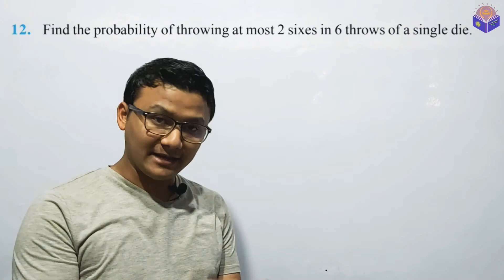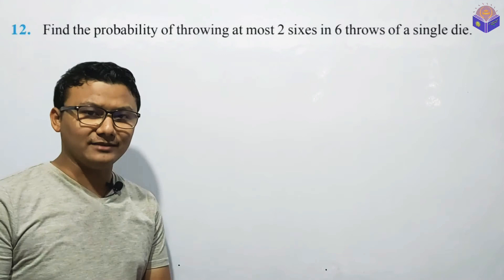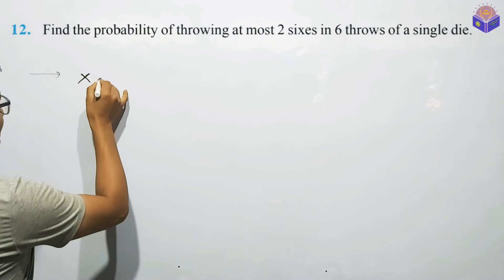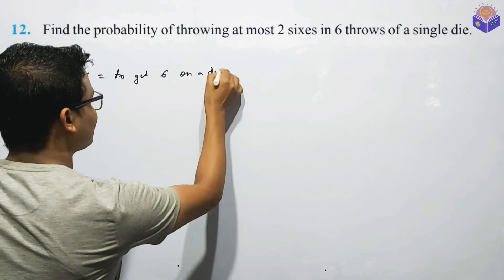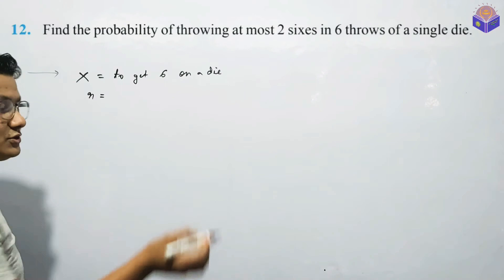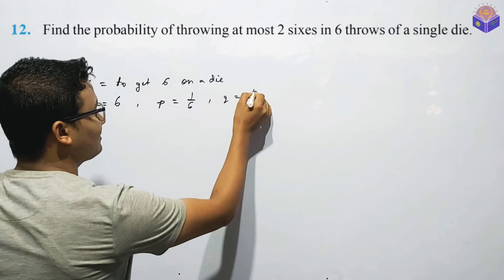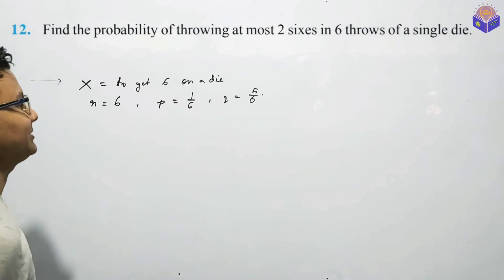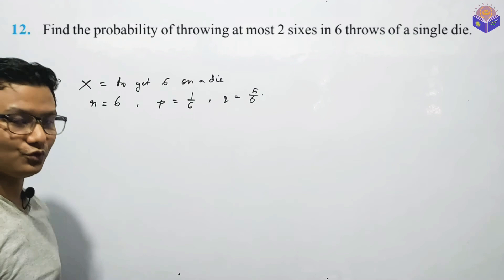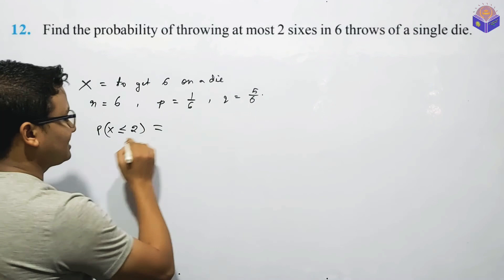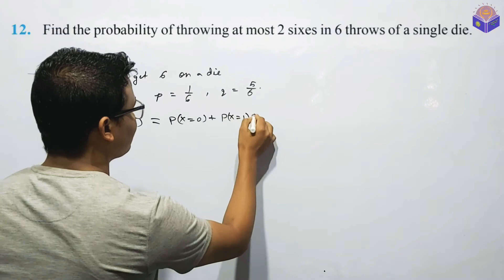At most 2: P of X less than or equal to 2. This is the meaning of X. B of X equal to 0, plus B of X equal to 1, plus B of X equal to 2. You have to write the name of the 2. So when you write: 6C0 is 1, plus 6C1 is 6 into 1 by 6, plus 5 by 6 to the power 5, plus 6C2 is 15.